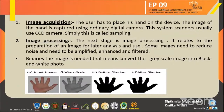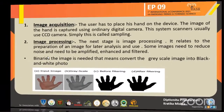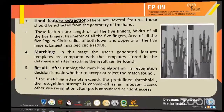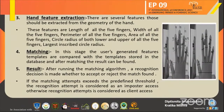Then hand feature extraction. There are several features that should be extracted from the hand: the length of all five fingers, the width of all five fingers, the perimeter and area of all five fingers, the circle radius of both the lower and upper parts of all five fingers, and the largest inscribed circle radius. The largest inscribed circle radius is a technique used to measure the gap between the fingers of a person.